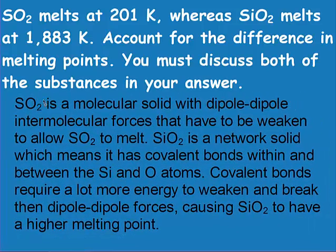Sulfur dioxide is a molecular solid with dipole-dipole intermolecular forces, which have to be weakened in order for it to melt. Silicon dioxide, however, is a network solid with covalent bonds within and between the silicon and oxygen atoms. Covalent bonds require a lot more energy to weaken and break than dipole-dipole forces, causing silicon dioxide to have a higher melting point.